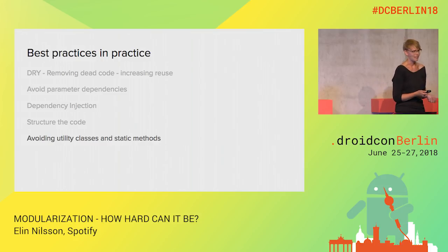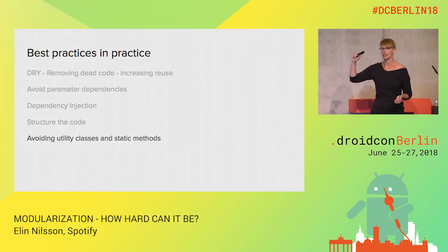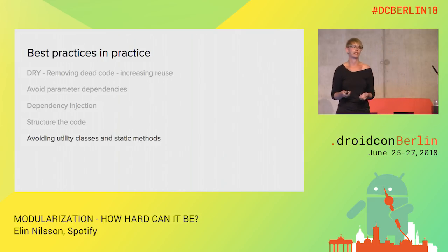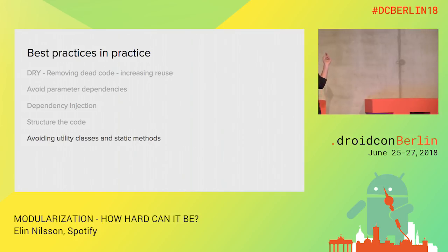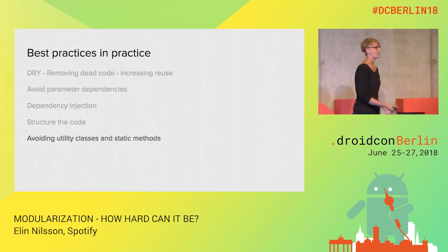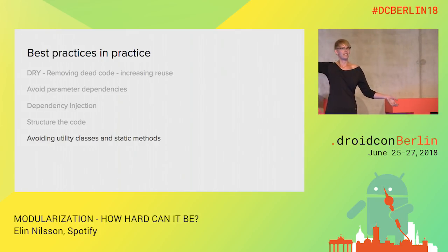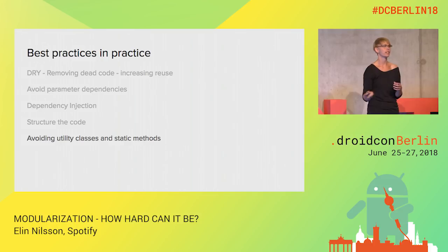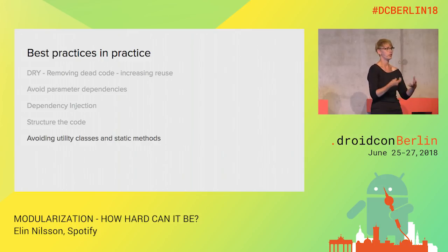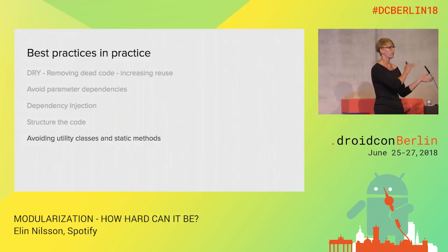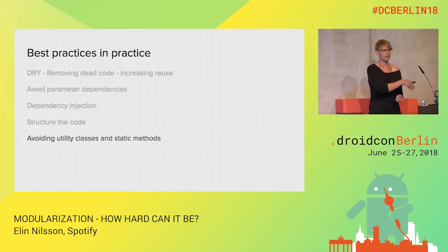Avoid utility classes and static methods. At Spotify we had a lot of these, and because they're static you send in all the parameters — all of them. Then someone introduces an A/B test and suddenly everything everywhere needs flags. Instead, use injectable helper objects that inject things like flags internally, so the parameters are only what the caller actually needs to provide.